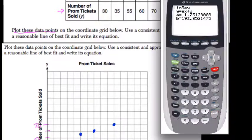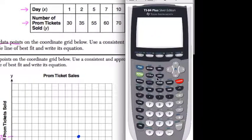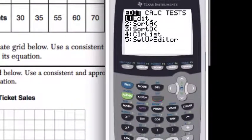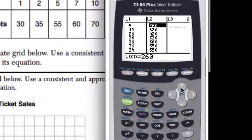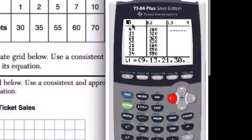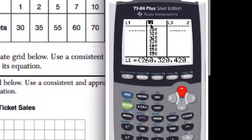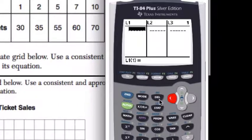The way it works in the graphing calculator is you enter things into lists of data. We hit STAT and edit our lists. You might have some data there already. Go up to the heading List 1, hit clear, then press enter. It clears the data. Same for List 2. We're going to use List 1 and List 2 for days and prom tickets.